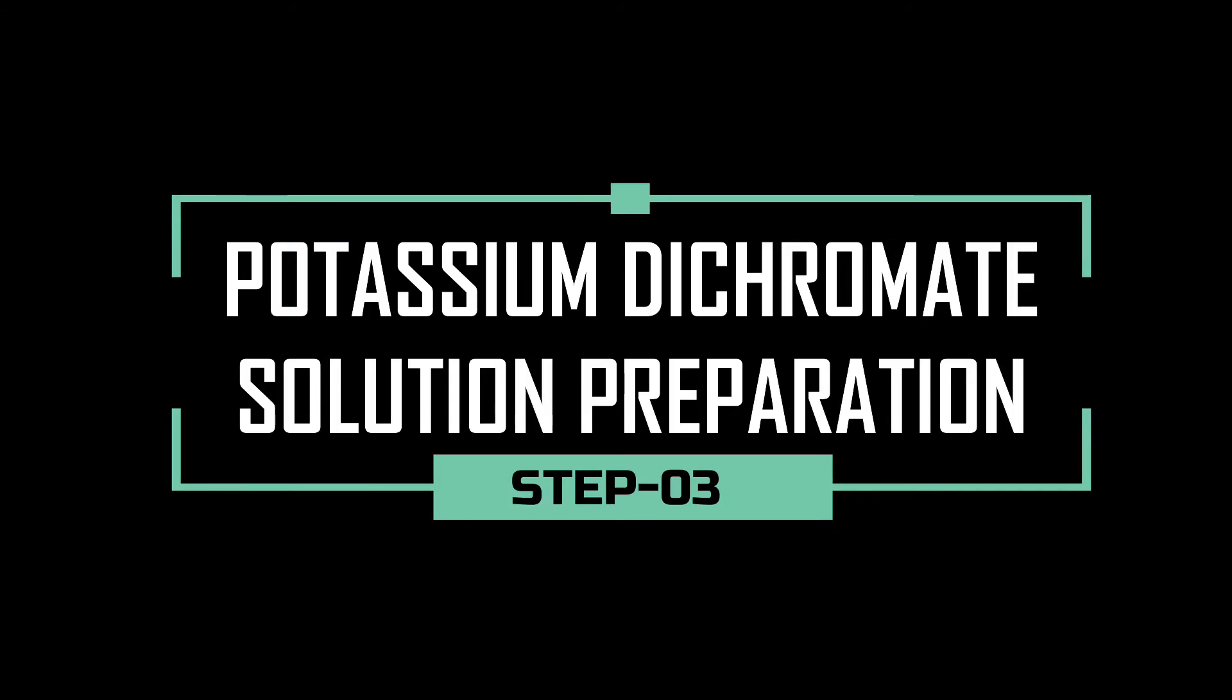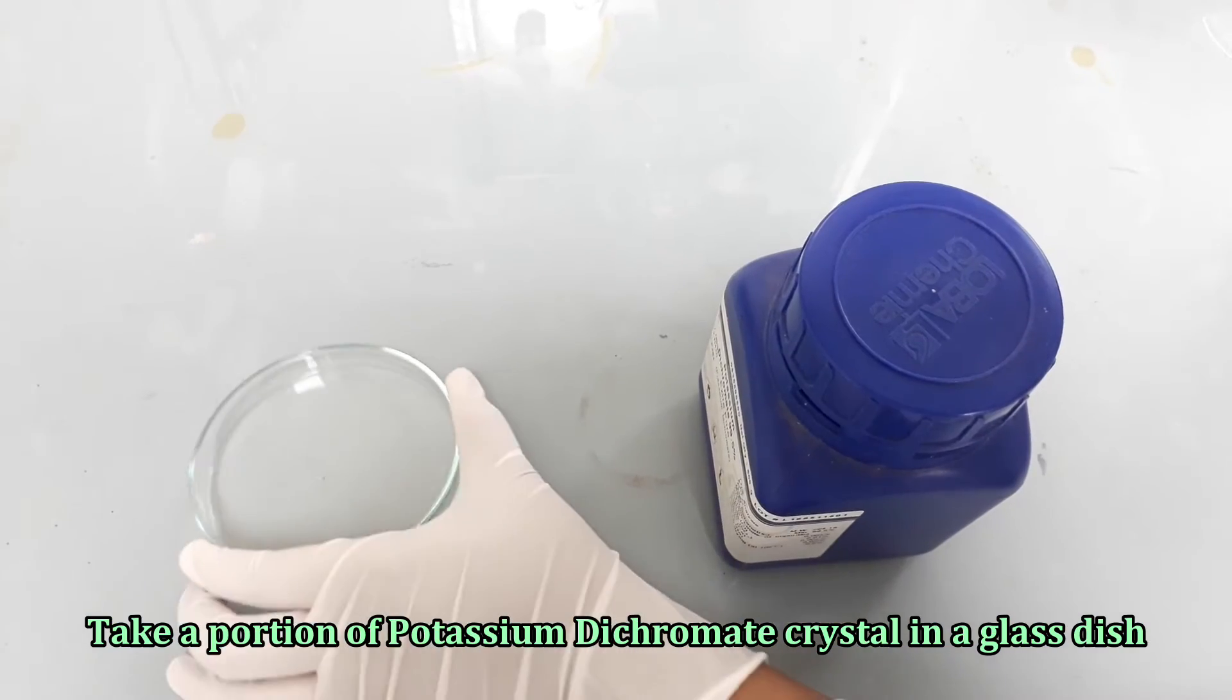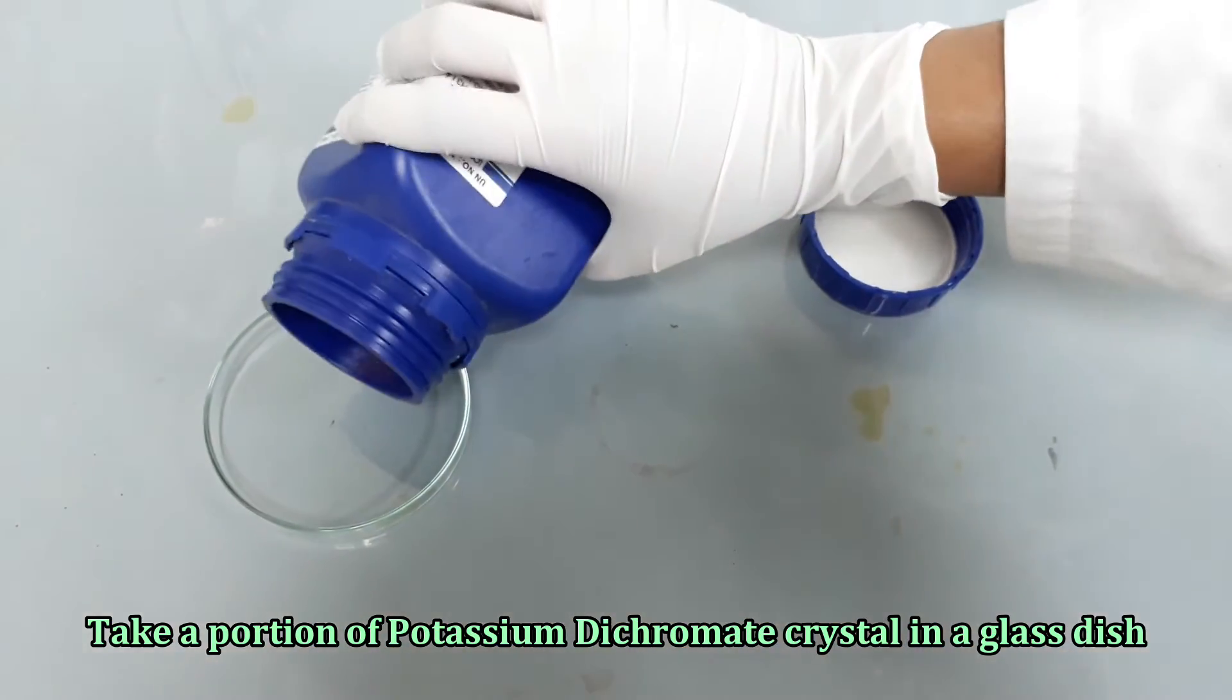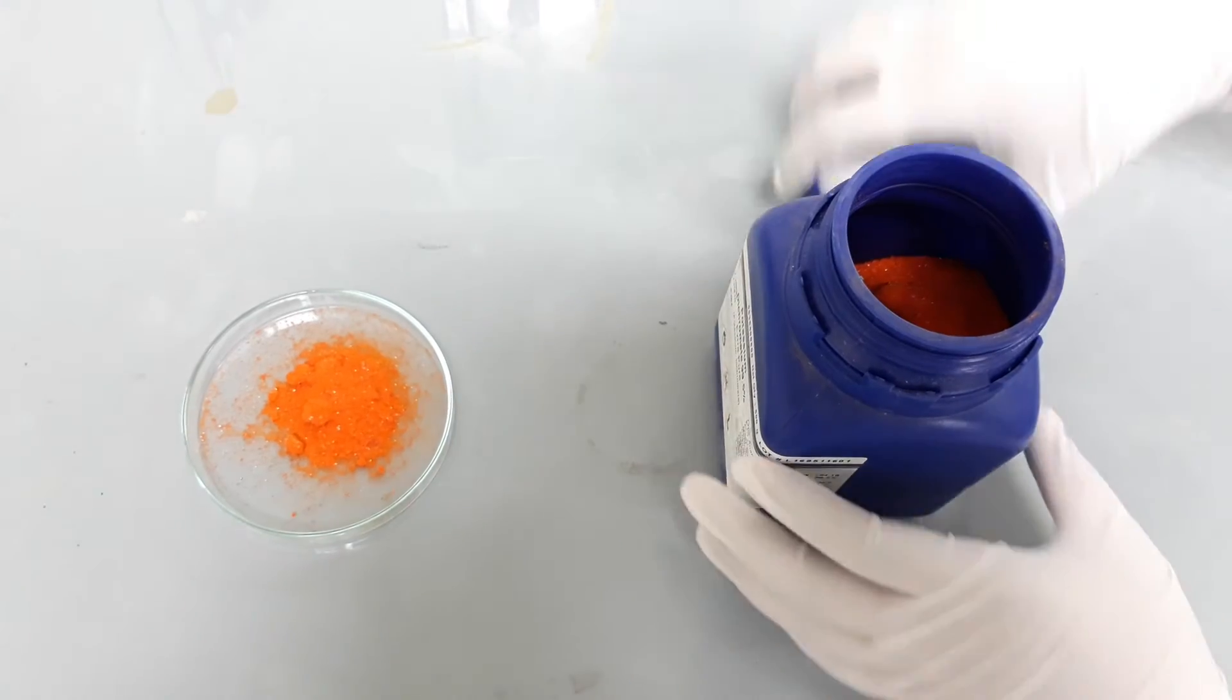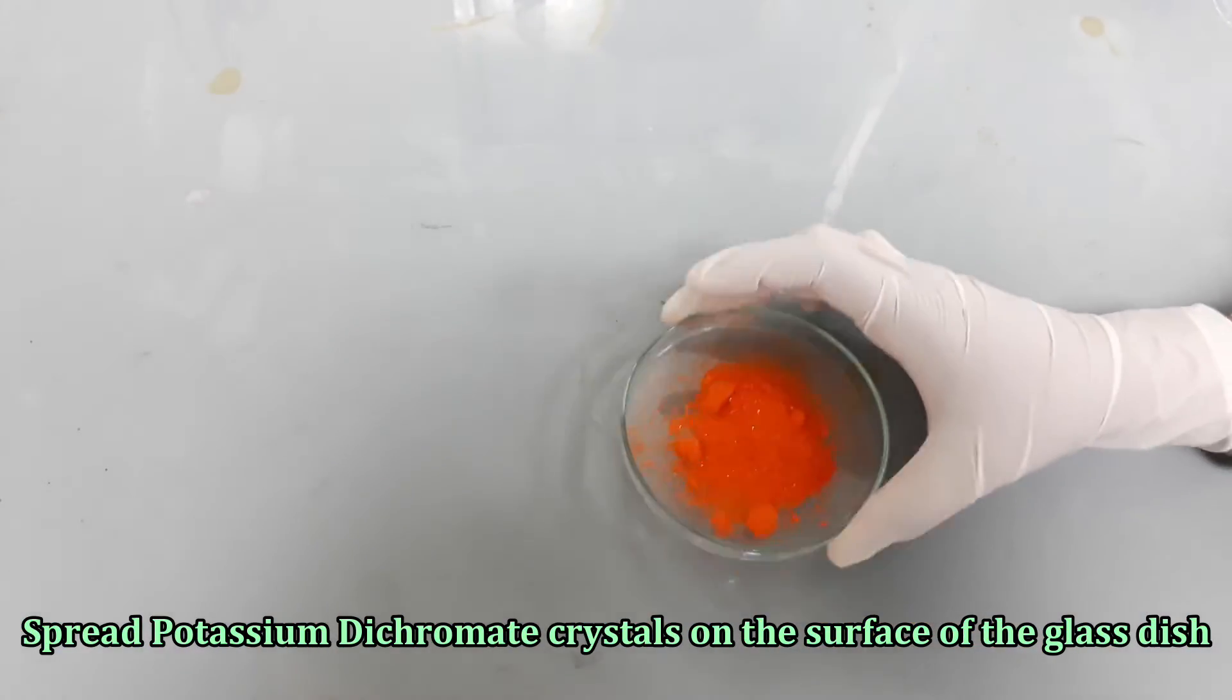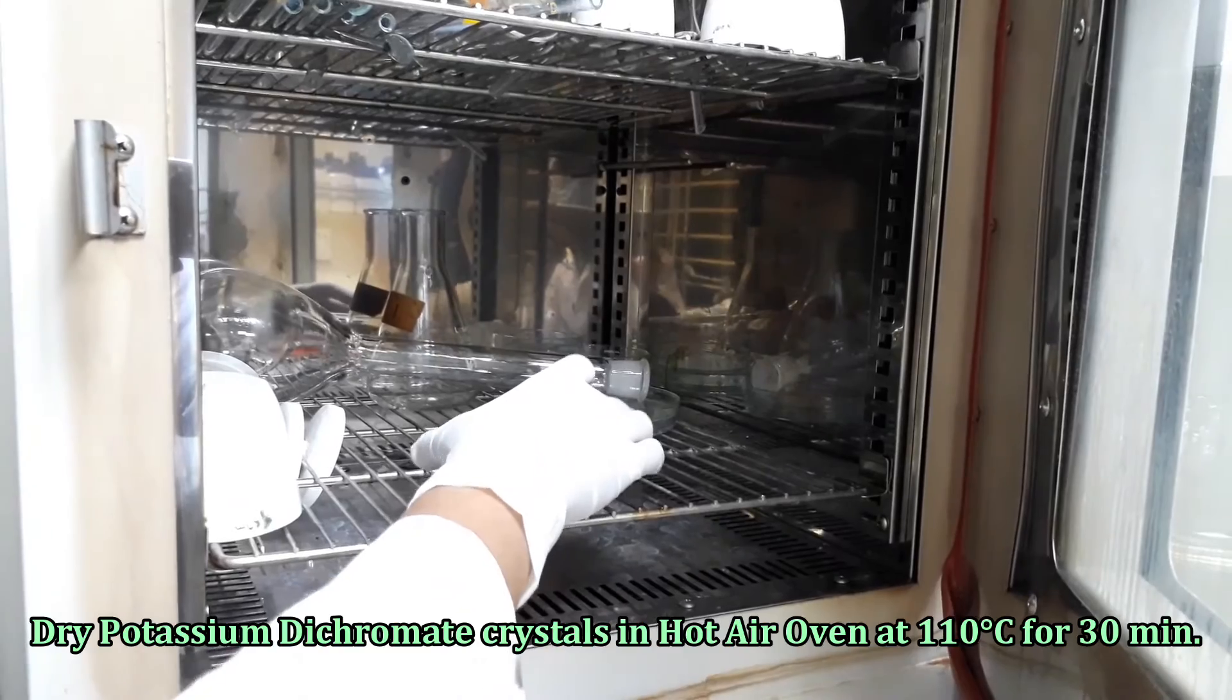Now, we will prepare potassium dichromate solution. Take a portion of potassium dichromate crystal in a glass dish. Dry the potassium dichromate crystals at 110 degrees Celsius for 30 minutes.